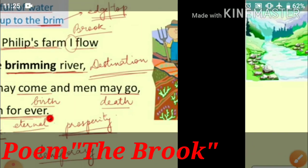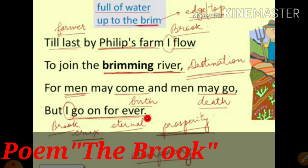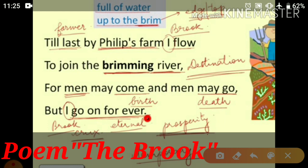Now let's move to the third stanza: 'Till last by Philip's farm I follow, to join the brimming river. For man may come, and man may go, but I go on forever.' Philip's farm refers to any farmer's land — the poet has used the name Philip. The brook flows past Philip's farm (akhir par main Philip's ke kheet se guzarti hoon) to join the brimming river. Brimming means full of water, up to the brim.